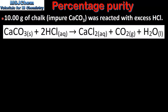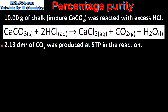Next we look at one more example. 10 grams of chalk, which is impure calcium carbonate, was reacted with excess hydrochloric acid. One mole of calcium carbonate reacts with 2 moles of hydrochloric acid to form 1 mole of salt, 1 mole of carbon dioxide and 1 mole of water. We are also told that 2.13 dm³ of carbon dioxide was produced at STP.